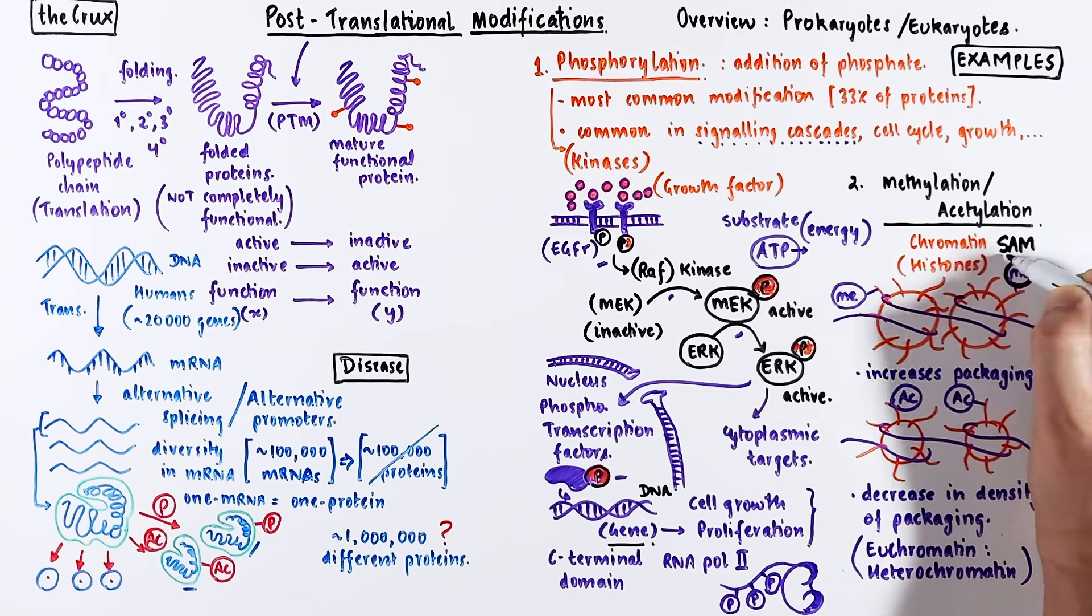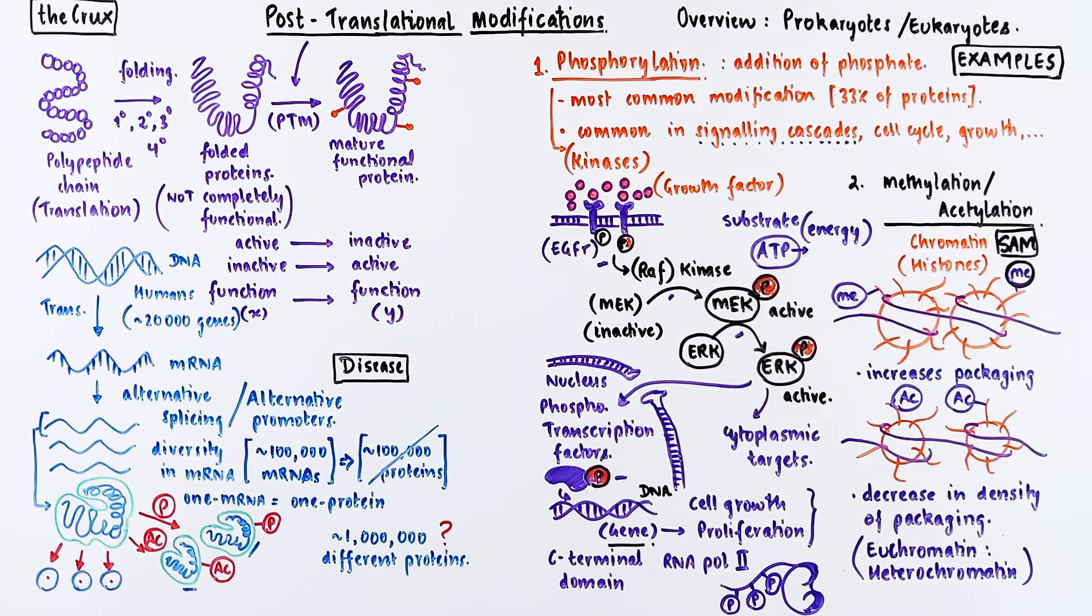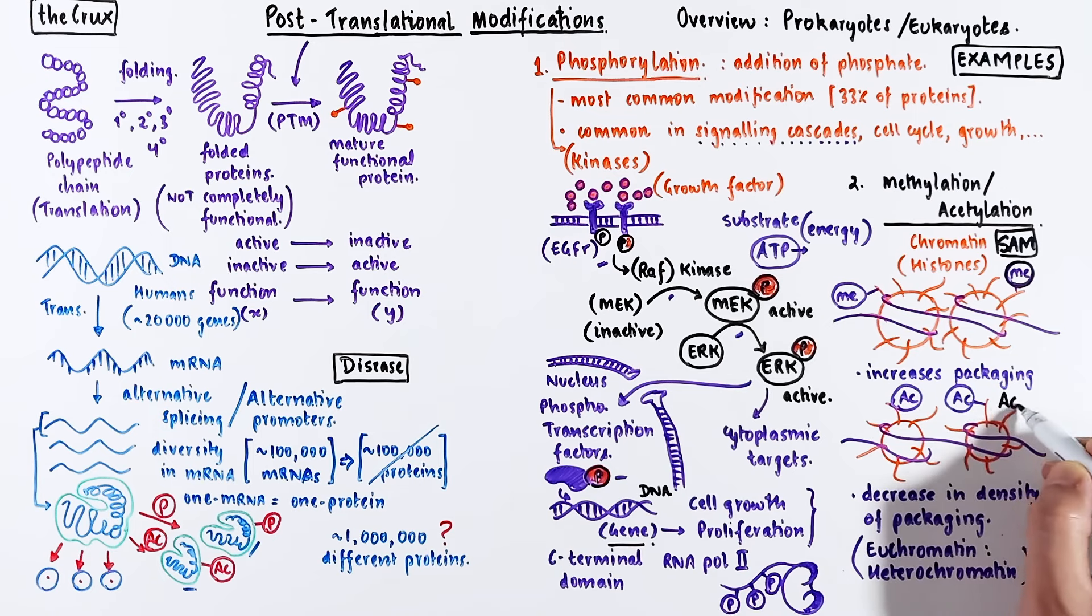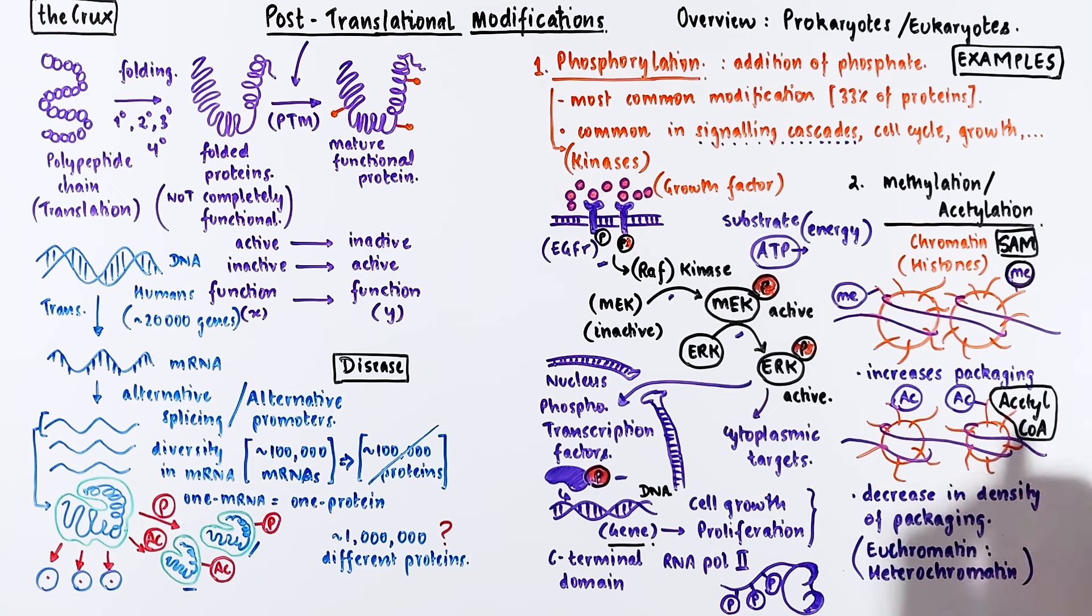Talking about substrates, the methyl is transferred from its substrate SAM, the same substrate we saw in the mRNA capping video. The acetyl group comes from its substrate acetyl coenzyme A. You may have seen this in biochemistry when discussing metabolism.